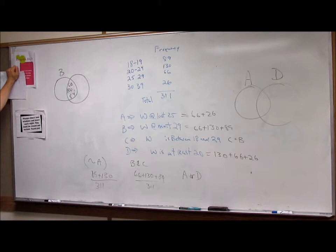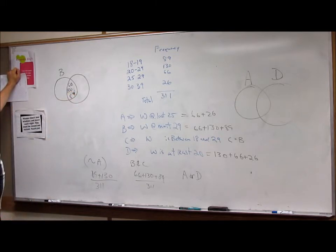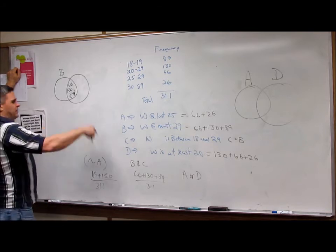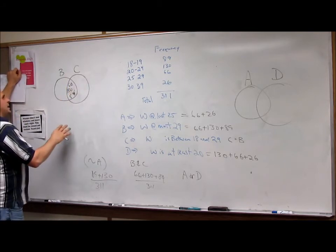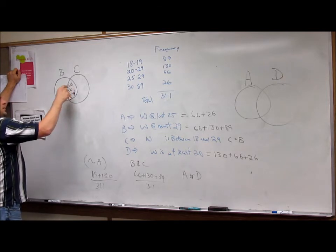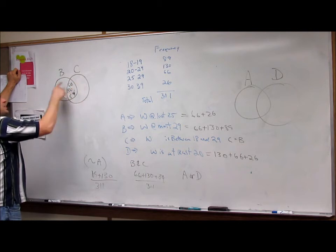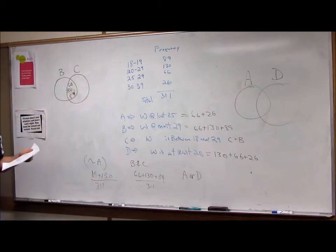89, sorry. Okay. So is it B and C? What we're saying is that's included in B and that's included in C. What's still included in B that's not included in C? Nothing, right?